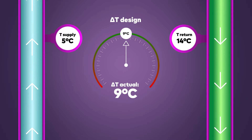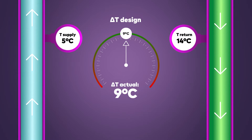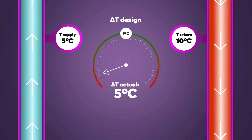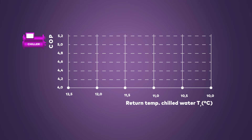In an efficiently functioning HVAC system, maintaining the system-designed Delta-T and power output indicates effective heat transfer at the design flow rate, ensuring that the system is running at its optimal performance. However, a lower Delta-T than the one specified in the design indicates lower efficiency. A two-degree reduction of the return temperature of the chilled water can lead to a drop of up to 15% in the coefficient of performance of the chiller.